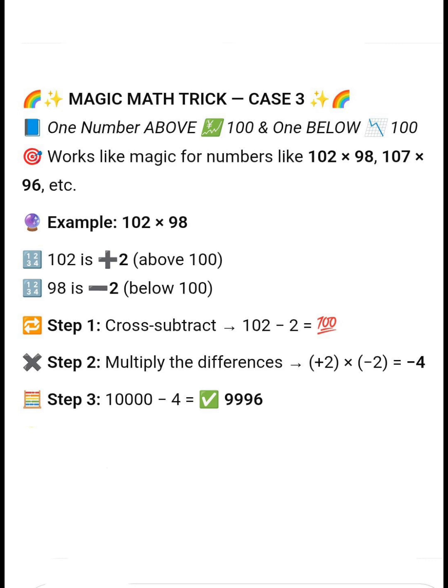Cross, subtract or add. 102 minus 2 equal to 100. Multiply the difference. Minus 2 into plus 2 equal to minus 4. So, final answer, 10,000 minus 4 equal to 9,996.